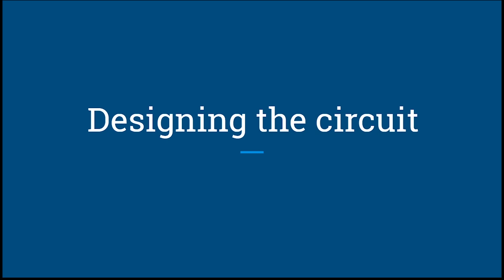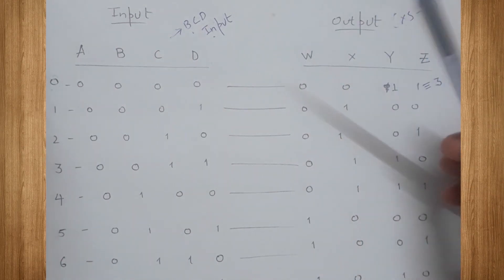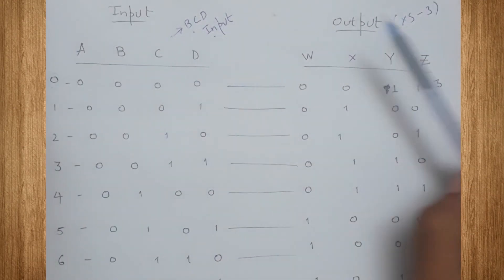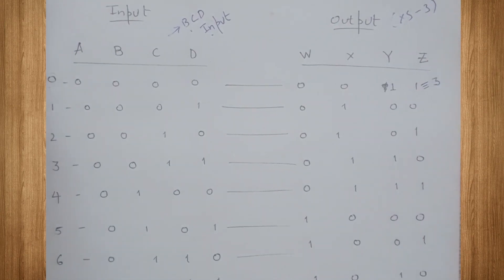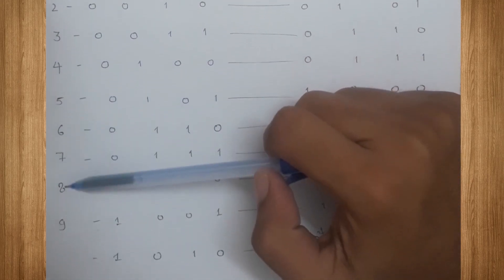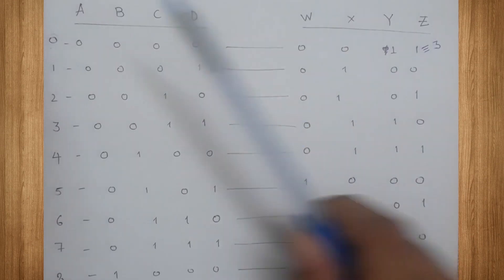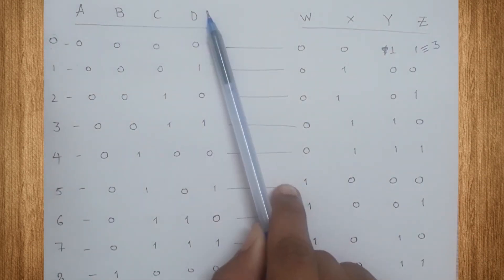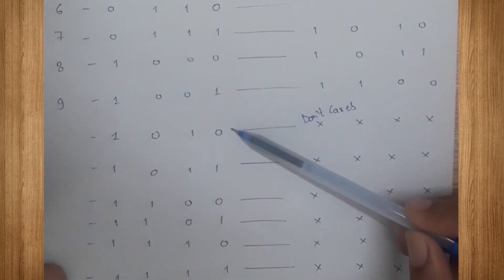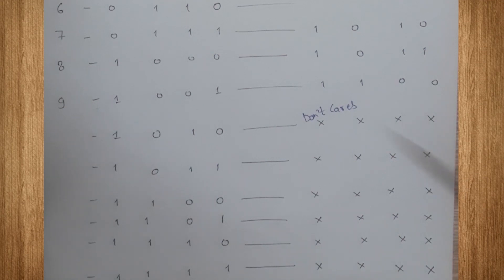Let's design our circuit. We have BCD input as ABCD and XS3 output as WXYZ. As we know, there are only 10 decimal digits: 0 through 9. That means we will have 10 different outputs in XS3 code, but the total number of combinations ABCD can represent is 16, meaning we have 6 don't-care conditions — inputs we don't need to account for while designing the circuit.